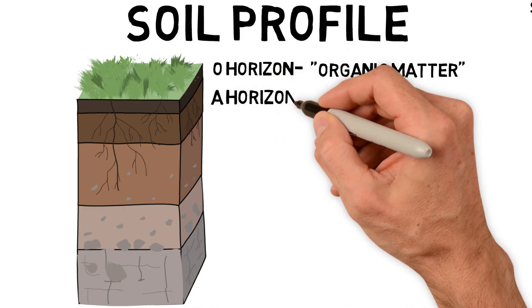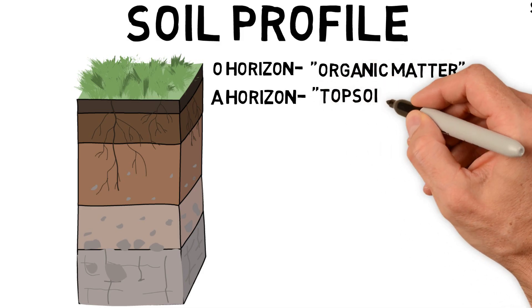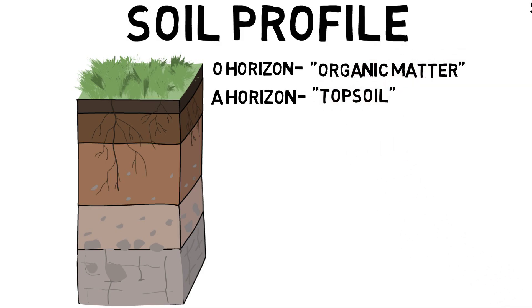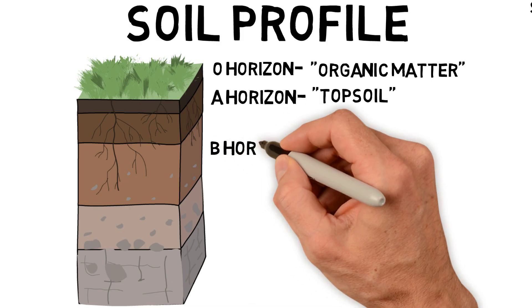The next horizon is the A horizon, and this is what most people know of as topsoil. Again, it has a darker color because of the addition of organic matter from above.